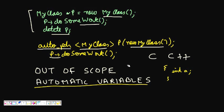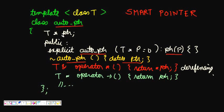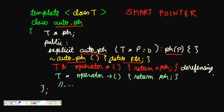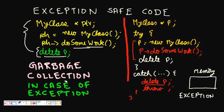AutoPointer is just a simple automatic variable class — when it goes out of scope, its destructor is called, and since the raw pointer is an attribute of the class it gets deleted and memory is freed. Even if a crash or exception happens, going out of scope triggers the destructor automatically, so the pointer is always deleted. That's the main idea behind smart pointers.